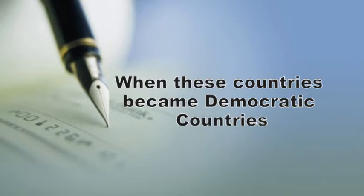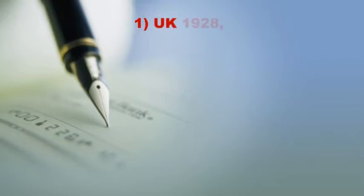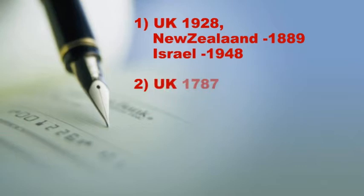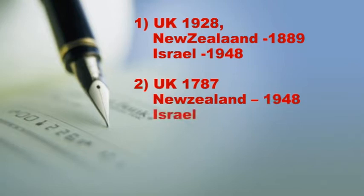Question 3: When did these countries become democratic countries? 1. UK 1928, New Zealand 1889, Israel 1948. 2. UK 1787, New Zealand 1948, Israel 1956. 3. UK 1707, New Zealand 1924, Israel 1100.